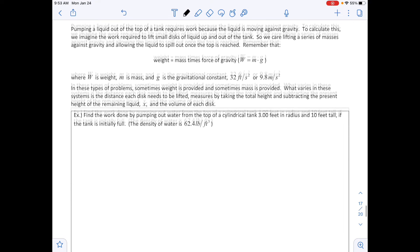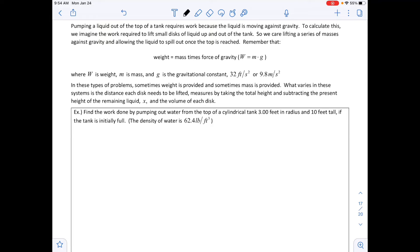The next thing is pumping a liquid out of the top of a tank requires work because the liquid is moving against gravity. To calculate this, we must imagine the work required to lift small disks of liquid up and out of the tank. We are carefully lifting up a series of masses against gravity and allowing the liquid to spill out once at the top. Remember that weight equals mass times force of gravity, or w equals m times g. And our mass equals the volume times our density. Where w is weight, m is mass, g is the gravitational constant, either 32 feet per second squared or 9.8 meters per second squared. Sometimes weight is provided and sometimes mass is provided.